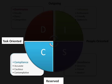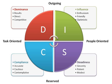These four dimensions can be grouped in a grid, with D and I sharing the top row and representing extroverted aspects of the personality, while C and S below represent introverted aspects. D and C share the left column and represent task-focused aspects, while I and S share the right column and represent social aspects. In this matrix, the vertical dimension represents assertive or passive, while the horizontal dimension represents open or guarded.